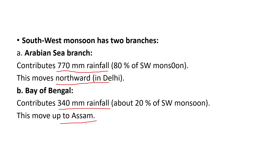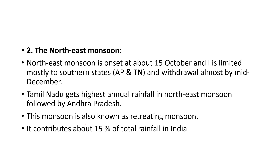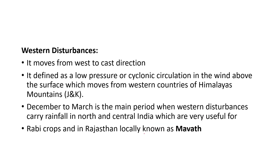The second type of monsoon is the northeast monsoon. It onset at about 15th October, is limited mostly to southern states, and withdraws almost by mid-December. This monsoon is also known as retreating monsoon. It contributes about 15% of total rainfall in India, while southwest monsoon contributes major 75% or more.